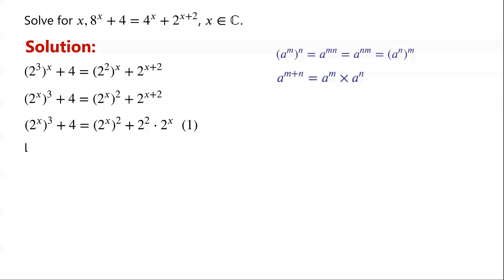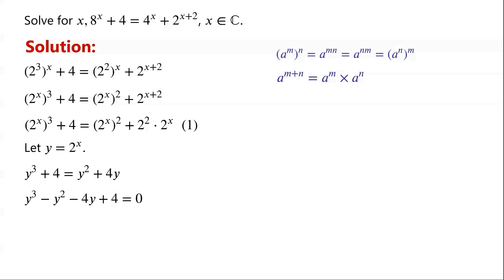Now we let y equal 2 to the power of x. Then the equation can be written as y cubed plus 4 equals y squared plus 4y. Rearranging, we have y cubed minus y squared minus 4y plus 4 equals 0.